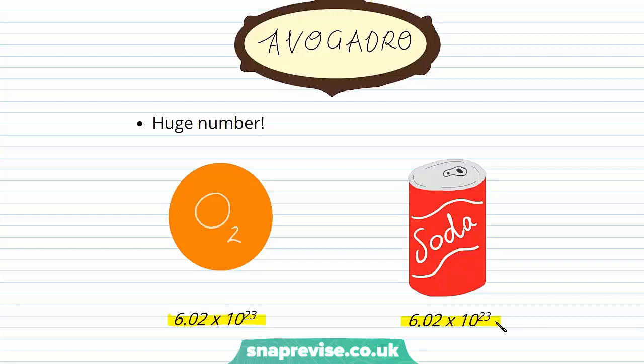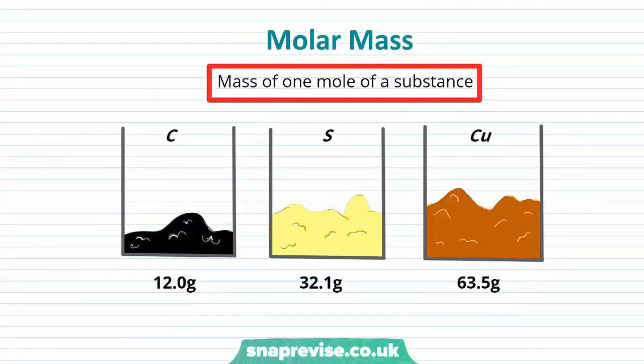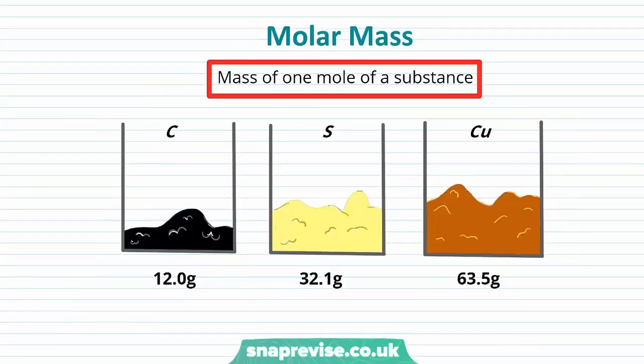So now we've had a look at the mole, let's go ahead and have a look at molar mass. Molar mass is the mass of one mole of a substance. Here I've drawn a diagram of three beakers containing one mole of three different elements. We have carbon, sulphur and copper.